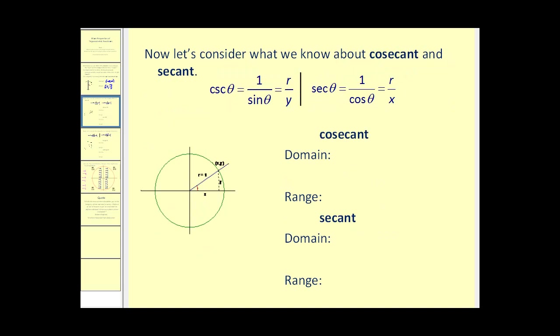Now let's take a look at cosecant and secant. Cosecant theta equals r over y, so cosecant is not going to be defined when y is equal to zero. And secant theta is not going to be defined when x is equal to zero.